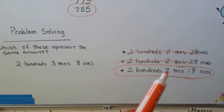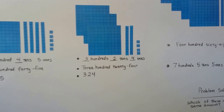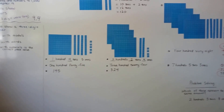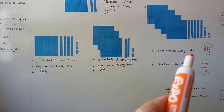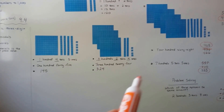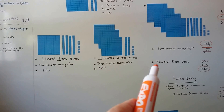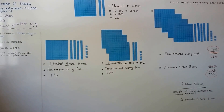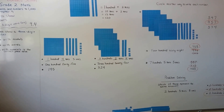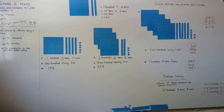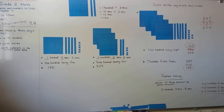We can show a three-digit number using models, word form — like one hundred forty-five, three hundred twenty-five, four hundred sixty-eight — or as a numeral. In word form, the number has to be spelled out, so seven would be s-e-v-e-n. We'll continue talking about three-digit numbers and the values of each digit in the next video.